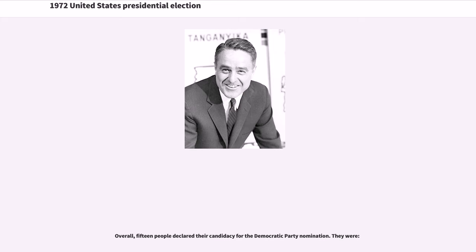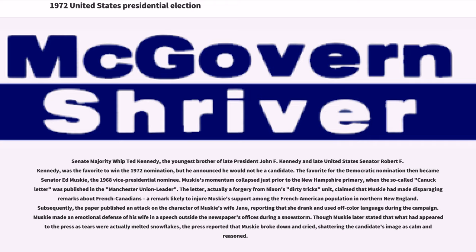Overall, 15 people declared their candidacy for the Democratic Party nomination. Senate Majority Whip Ted Kennedy, the youngest brother of late President John F. Kennedy and late United States Senator Robert F. Kennedy, was the favorite to win the 1972 nomination, but he announced he would not be a candidate. The favorite then became Senator Ed Muskie, the 1968 vice presidential nominee. Muskie's momentum collapsed just prior to the New Hampshire primary when the so-called Canuck letter was published in the Manchester Union Leader.